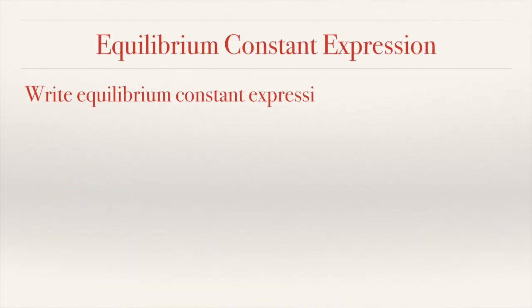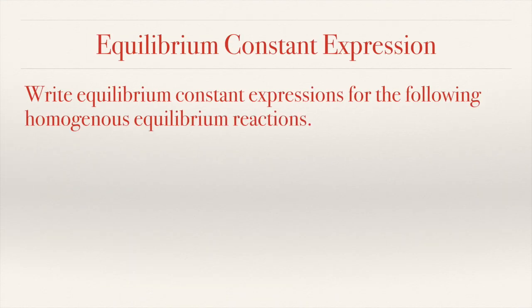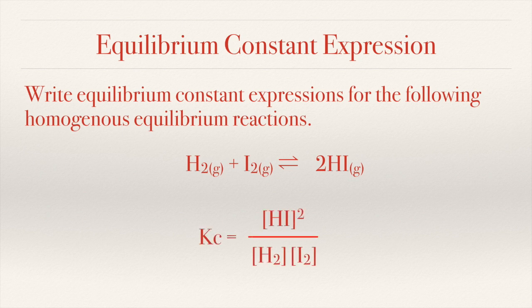Here is an example. For the reaction between hydrogen and iodine forming hydrogen iodide, the equilibrium constant expression looks like this: [HI] squared divided by [H₂] times [I₂]. The coefficients for H₂ and I₂ are both 1, therefore we do not write any exponent numbers for those.